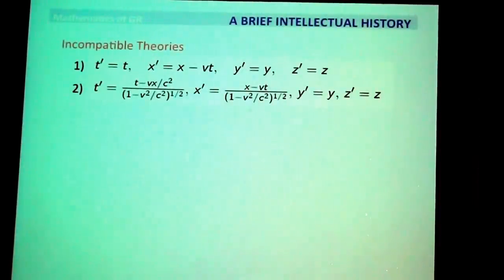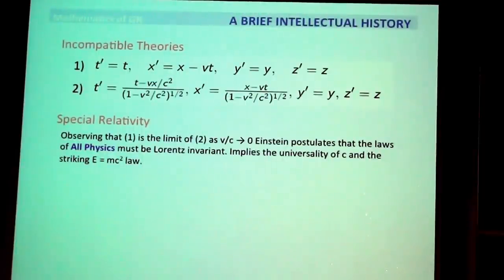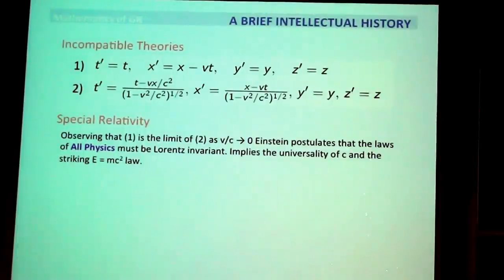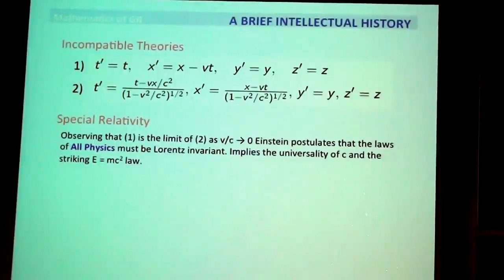What Einstein did was observe that the Galilean is a limit of the Lorentzian — if you let c go to infinity, the Lorentz transformation becomes the Galilean. Therefore, it is natural to take the Lorentzian as the correct one, which is what he did. He declared that all physics, not just electromagnetism but all physics, must be Lorentzian. This implies the universality of c and the striking E equals mc² law. Mathematicians realized there is a simple geometric framework combining space and time into spacetime, in which measurements are done relative to a spacetime metric.